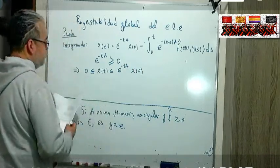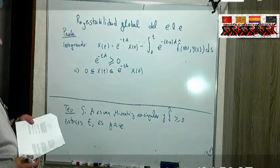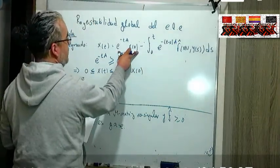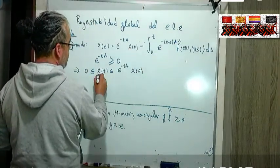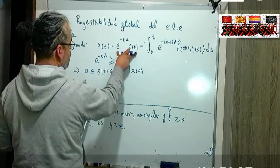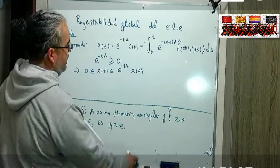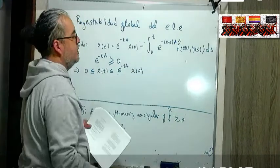Lo que vamos a tener implica que la x de t es positiva y además está acotada, está acotada por e a la menos t A x de 0, porque como esto es positivo y le estamos quitando a este, entonces este siempre va por debajo de este término.